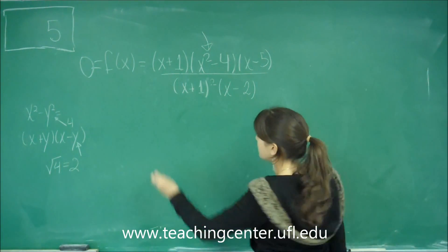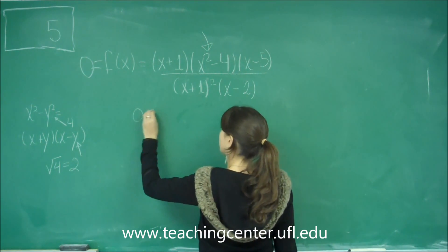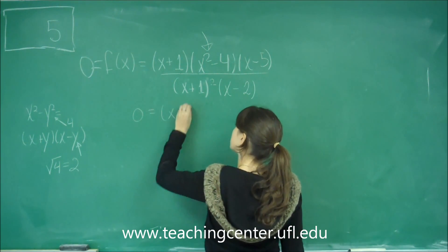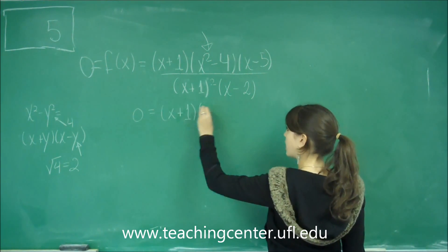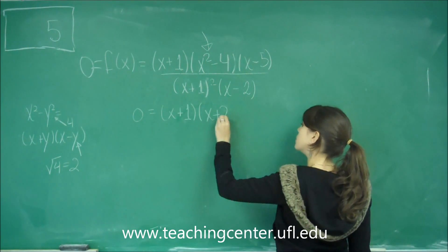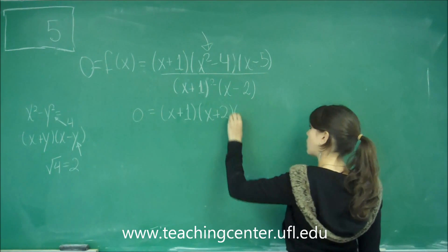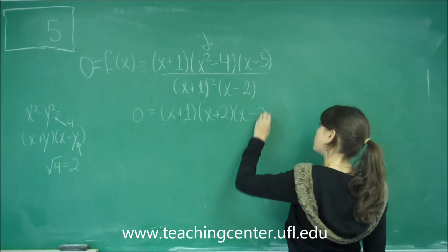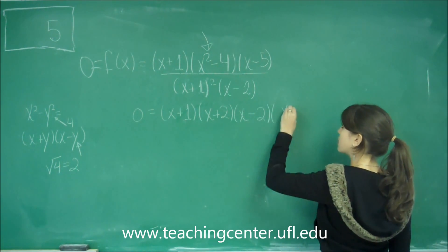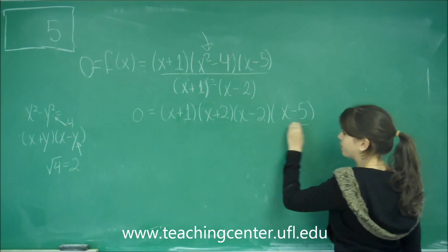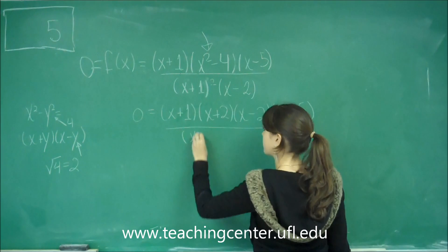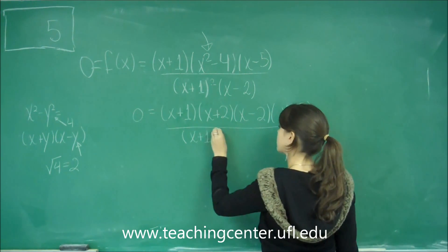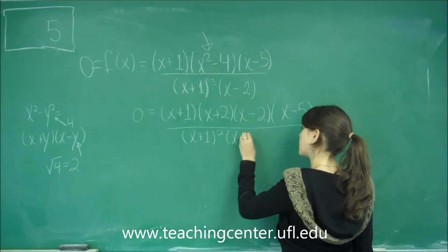That means that we're going to have 0 equals x plus 1, and now we have x plus y, y being 2, and then x minus y, y being 2, times x minus 5. And now, on the bottom, everything stays the same, x plus 1 squared, x minus 2.